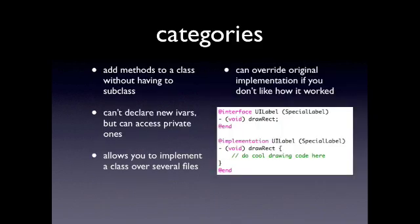Categories. You can add methods to a class without having to subclass it, which I think is pretty cool, because if you've got a framework, there's an object in it, and you don't like the way something works, you can change it on the fly and rewrite it the way you think it should've been written.